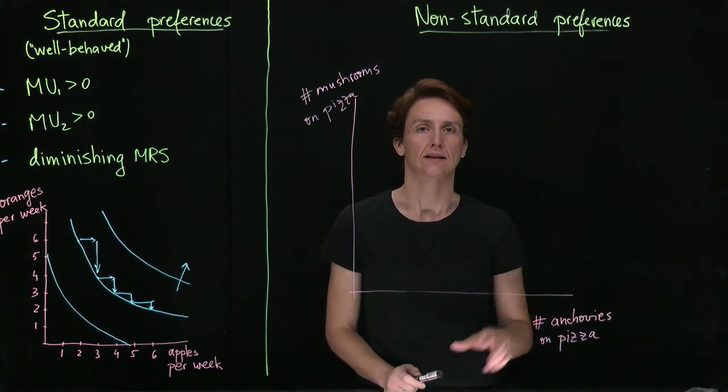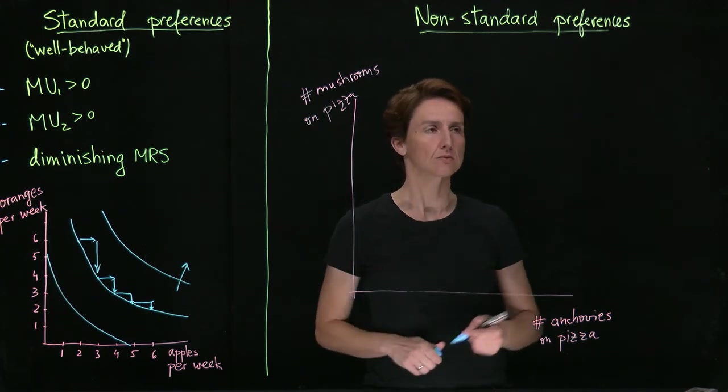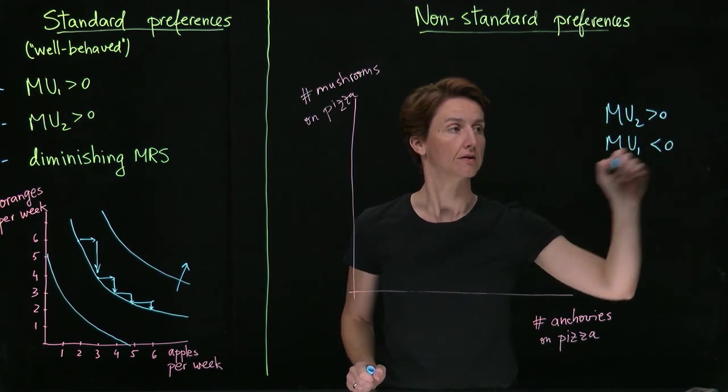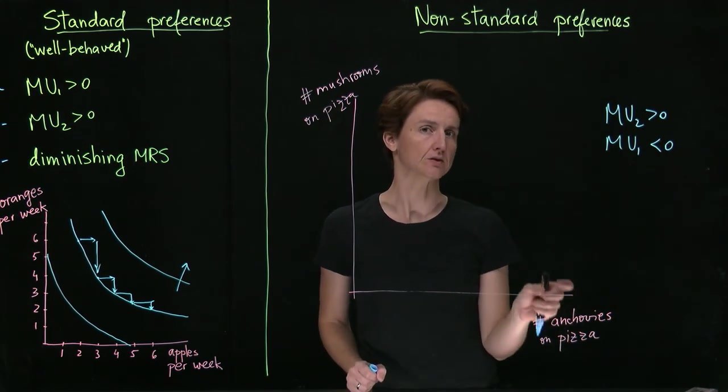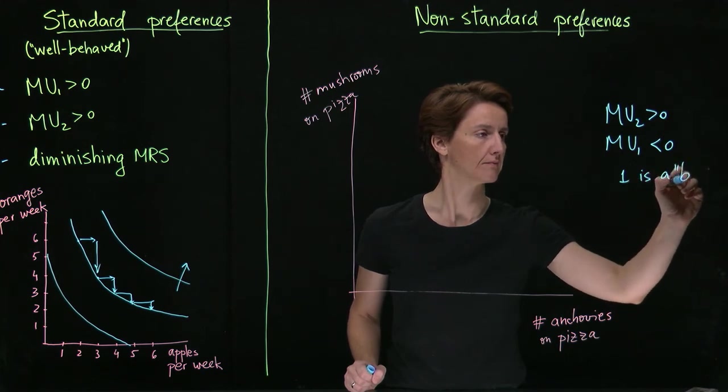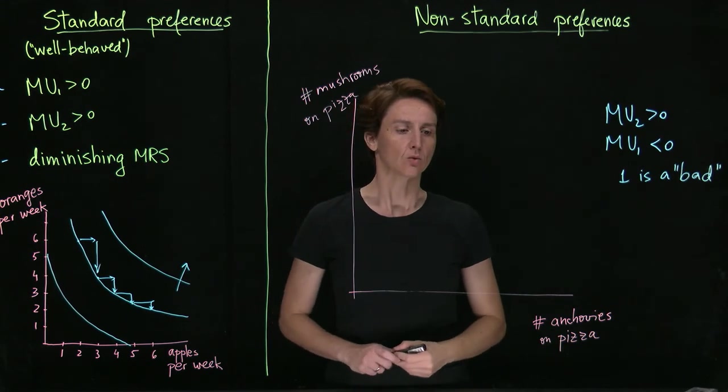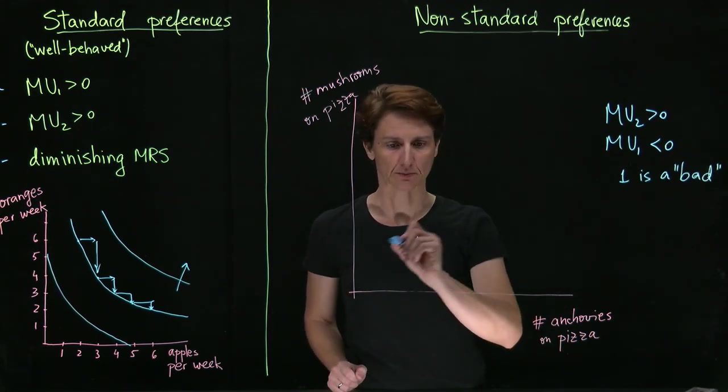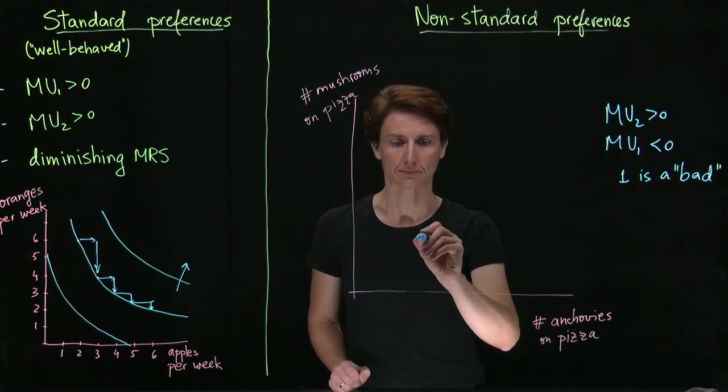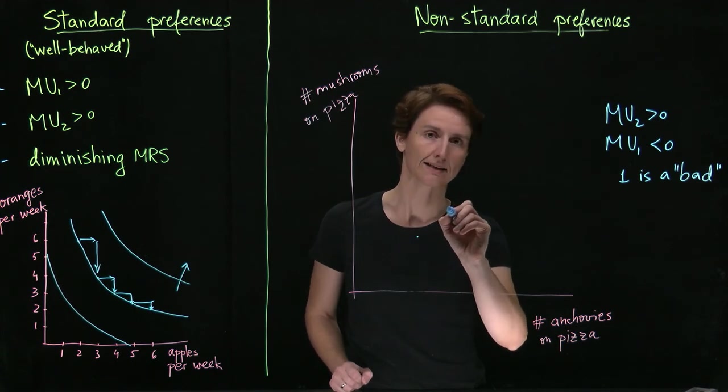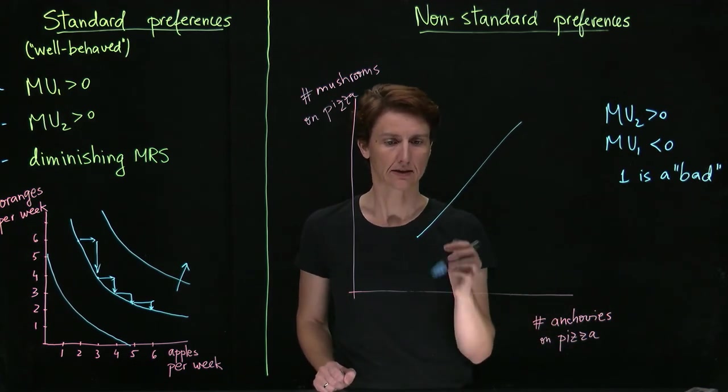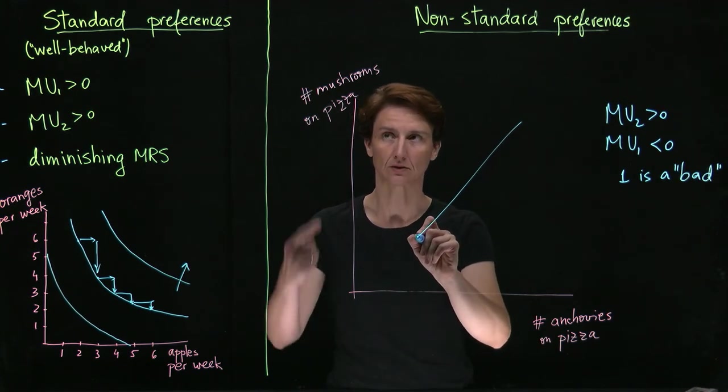Another one of the friends might actively dislike anchovies. So they like mushrooms, MU2 is positive, but MU1 is negative. If that's the case, if someone derives negative marginal utility at any level from a good, we would actually say that's a bad for them. What will indifference curves look like then? Imagine starting from some random point where you have three mushrooms and three anchovies on the pizza. If we're trying to keep you equally happy and we're adding mushrooms, which you like, we will have to also add anchovies, which you dislike. And in reverse, if we offer to take away some of your anchovies, you'll be better off. The only way to keep you at the same utility level is to also take away some mushrooms.